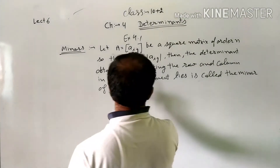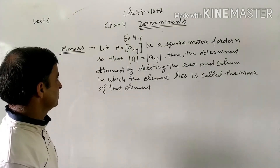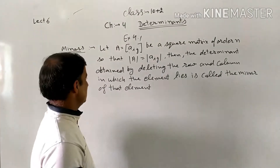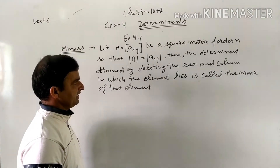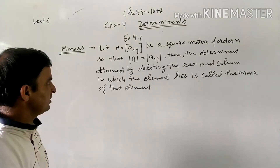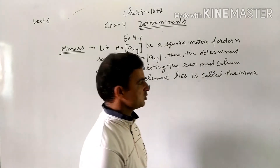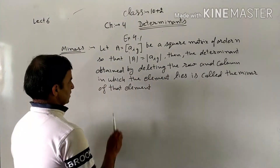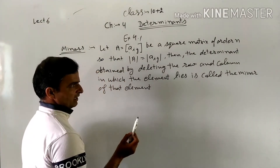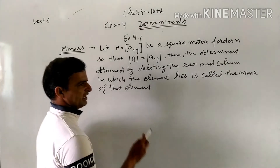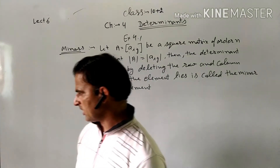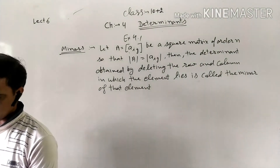Minor: let A be a square matrix of order N. The determinant obtained by deleting the row and column in which the element lies is called the minor of that element. The definition is clear. Let us show the example of minor.